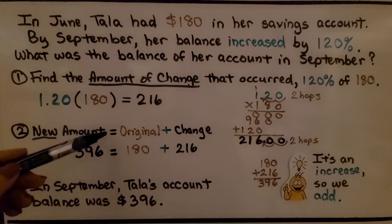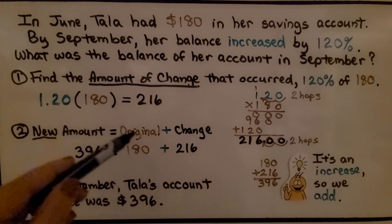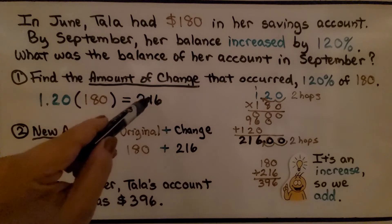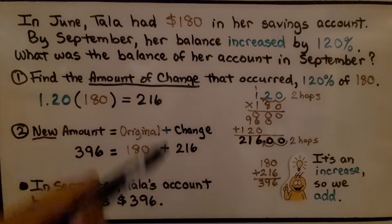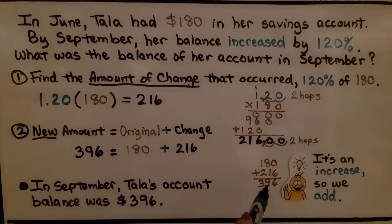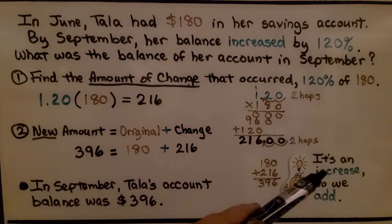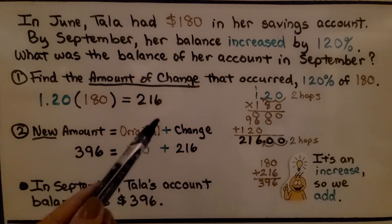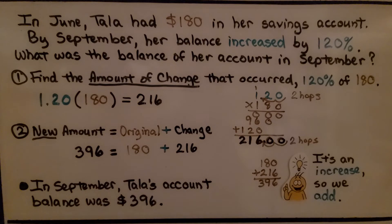The new amount equals the original amount plus the change. So the 216 is the change. We add 180 plus 216, we get 396. In September, Tala's account balance was $396. It's an increase, so we add the original amount and the change.